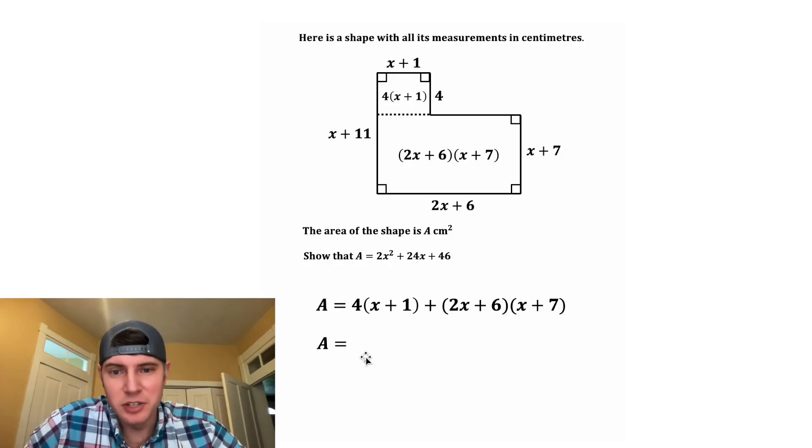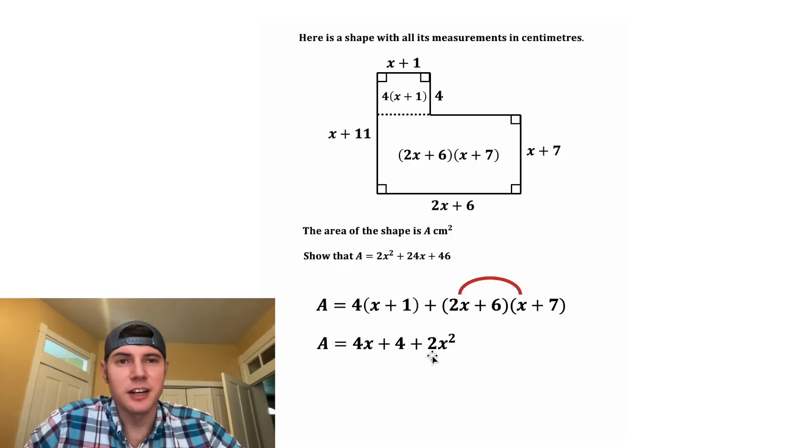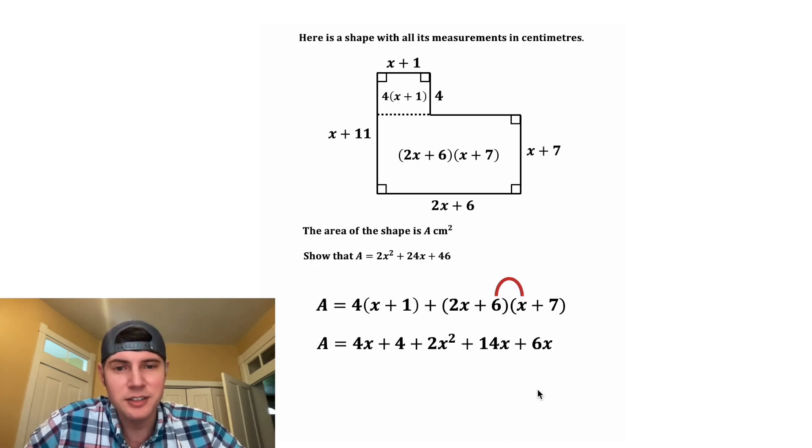So now let's clean this up. We're going to do some distribution. We're going to multiply the 4 times the x, which is 4x, and then the 4 times the 1, which is 4. And then we'll do the same thing here. We'll do 2x times x, which is 2x squared. And then we'll do 2x times 7. 2 times 7 is 14, and then we still have an x. Then we'll do 6 times x, which is 6x. And then we'll do 6 times 7, which is 42.